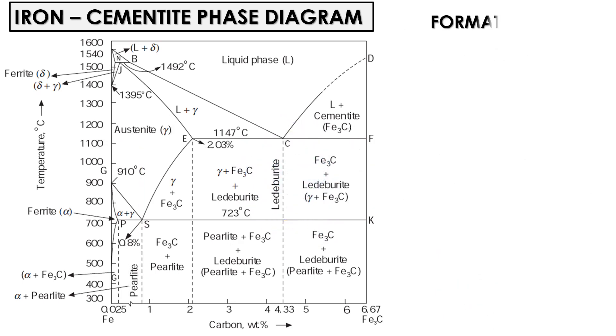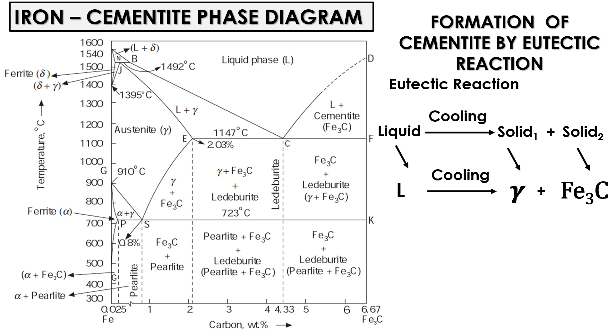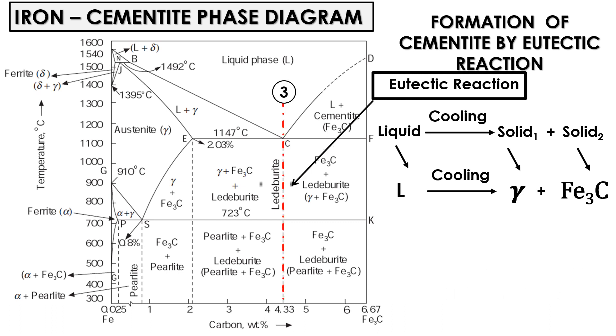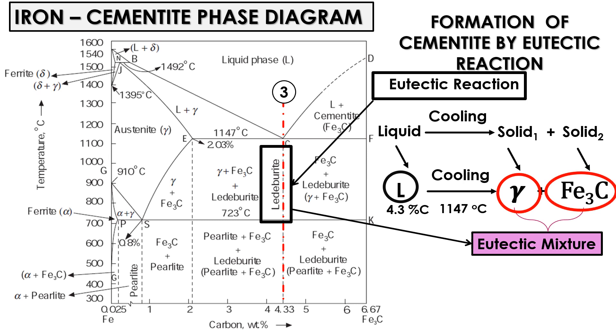The formation of the cementite phase can also occur through a process known as eutectic reaction. In a eutectic reaction, a liquid solution undergoes a simultaneous transformation into two solid phases as it cools down. This phenomenon is characterized by its invariance, which means it happens at a constant temperature and constant composition. In the iron-carbon phase diagram, this eutectic reaction results in the formation of the ledeburite phase, which is a eutectic mixture of austenite and cementite. So, in this eutectic reaction, the liquid phase with 4.3% of carbon at a fixed temperature of 1147 degree centigrade gives two solid phases, that is austenite and cementite upon cooling.